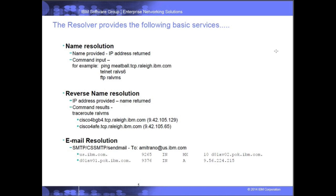You can also use the Resolver for reverse name lookup — providing an IP address to get a name back. A traceroute command is a good example: even though you pass a host name, you get back IP addresses of all routers traversed, and traceroute can convert those IP addresses back to host names. There's also an MX record example: SMTP or CSS MTP can resolve a domain name to get the mail exchange address using DNS or Resolver services.